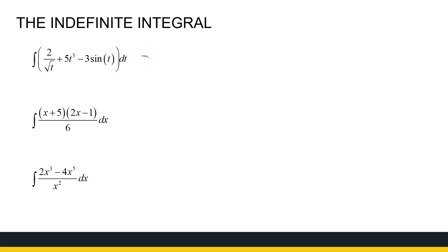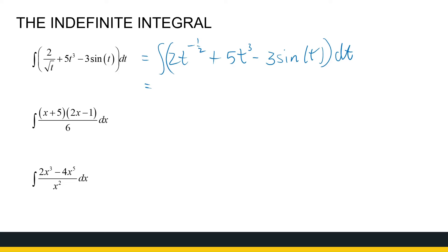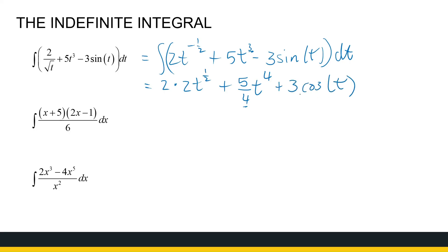Let's do more. First, rewrite: we have 2t to the power minus one half. Adding 1 to minus one half gives one half, and 1 over (1/2) is 2, so that term gives 2 times 2 times t to the power one half. Then plus 5 over 4 t to the power 4, adding 1 to the exponent. For the minus 3 sine t term: the integral of sine is negative cos, but always check the sign — the derivative of cos t is minus sine t, so the integral of minus 3 sine t is plus 3 cos t. Everything plus c. You can simplify the first part by multiplying 2 with 2 to get 4.